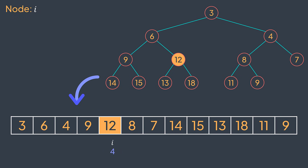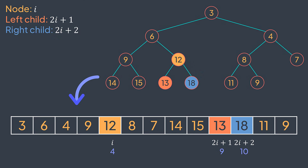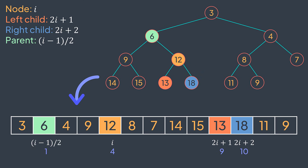For any node at index i, we can find its left child at index 2i+1, its right child at index 2i+2, and its parent at index (i-1)/2. Therefore, we can easily move between the nodes just by calculating the index. That's what we will do when we implement the binary heap — we will store it in an array, but I will still show you the tree representation to understand what's happening.